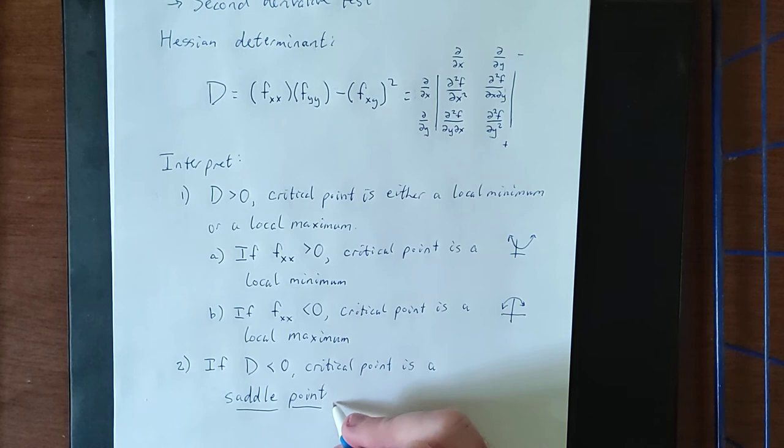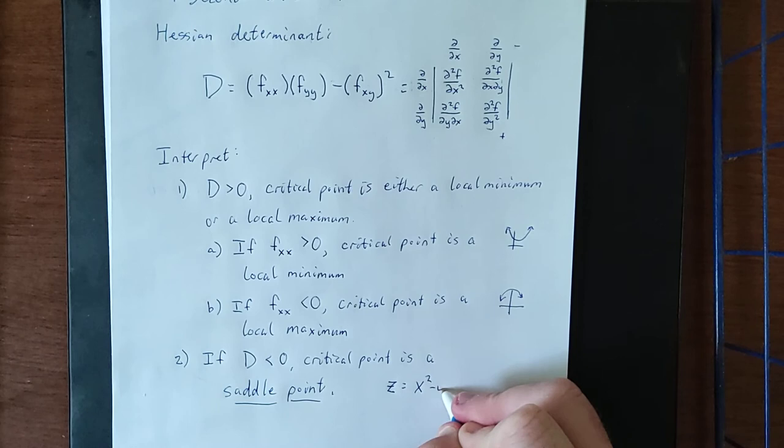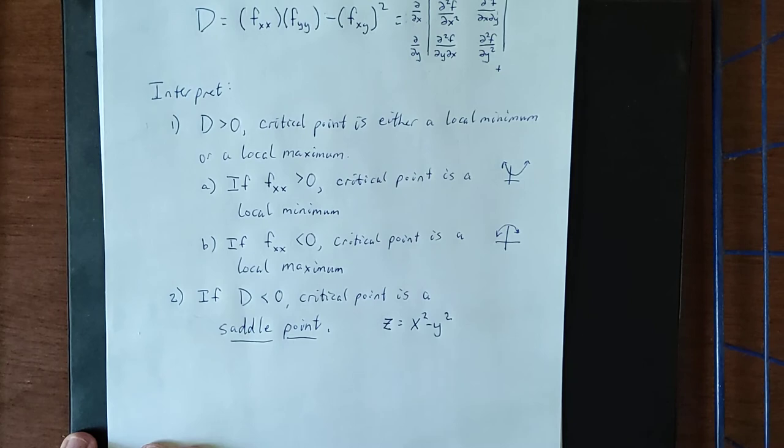A saddle point is a critical point that looks like a local minimum from one perspective, and a local maximum from another perspective. The quintessential example of a saddle point, and I would recommend that you look into this, is the hyperbolic paraboloid z equals x squared minus y squared. Take a look at the graph of that for a better interpretation of exactly what is meant by a saddle point.